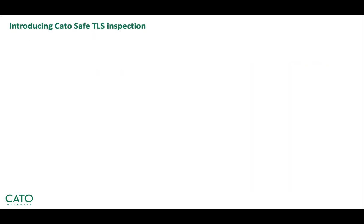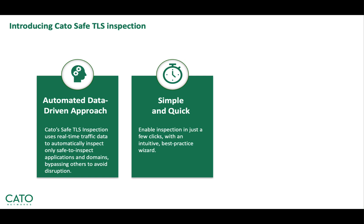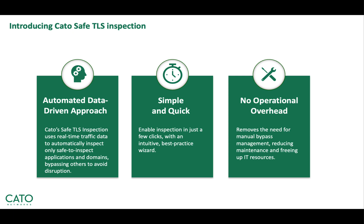Cato Safe TLS Inspection resolves the complexity and risk associated with inspecting encrypted traffic by leveraging a data-driven approach to automatically identify apps and domains which are safe to inspect while bypassing everything else, allowing IT teams to enable TLS Inspection in seconds using a best practice wizard, therefore eliminating the operational overhead of continuous manual bypass list management and freeing up resources for higher priority tasks. Let's see it in action!